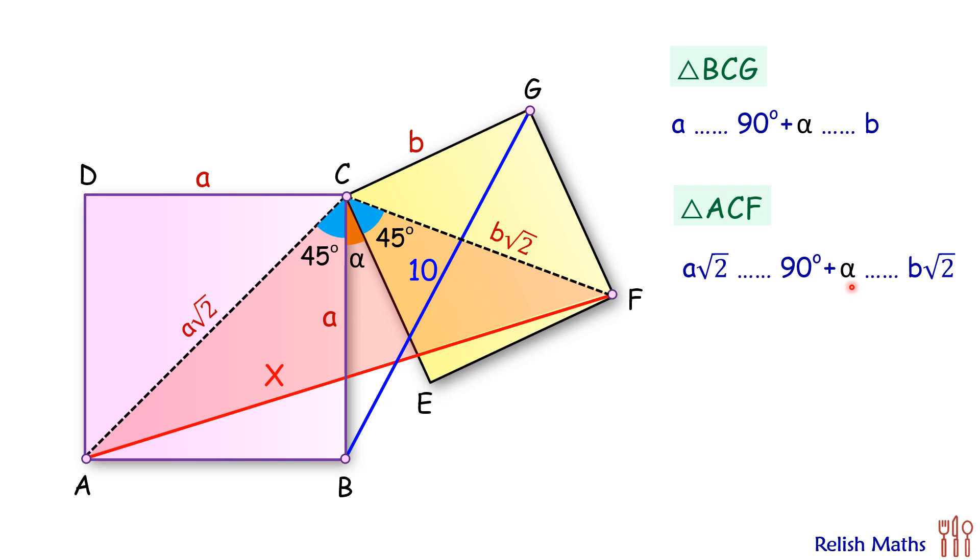Thus by side-angle-side, these two triangles will be similar. As the triangles are similar, the ratio of the third side will be the same, that is 1 to √2.